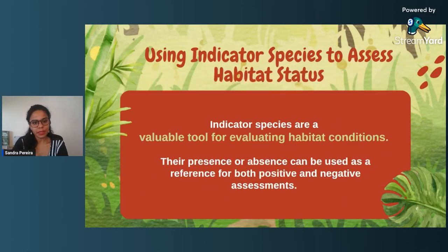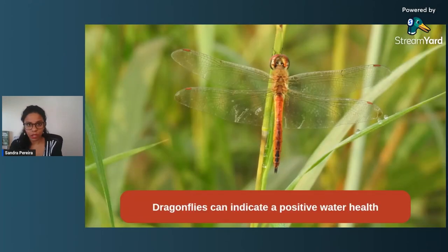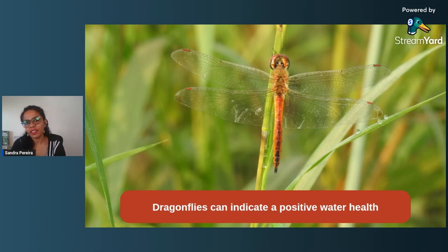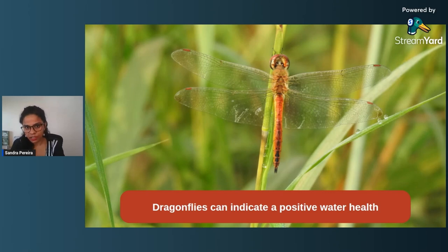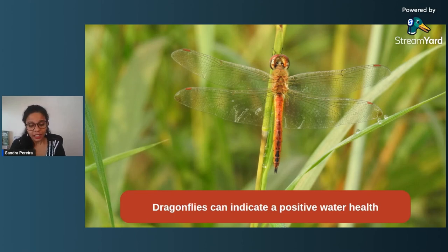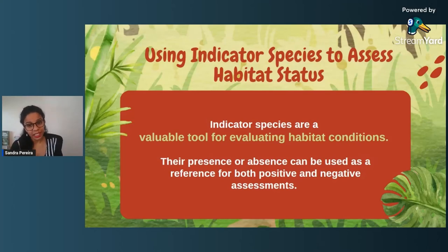Indicator species are a valuable tool to evaluate the conditions of a particular habitat — their presence or absence can definitely tell you whether a habitat is healthy or not. For example, water hyacinth tells you water quality is bad. Dragonflies, on the other hand, can indicate positive water health because their entire life cycle — from laying eggs to becoming a fully grown adult — is dependent on water. If your water health is bad, you will not see dragonflies in that region. So indicator species can serve to tell you both the negative and the positive impacts — it's not just one side of the story.